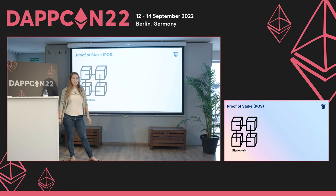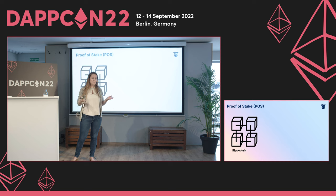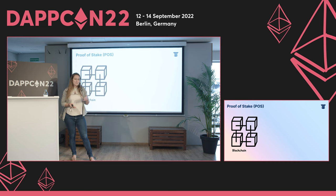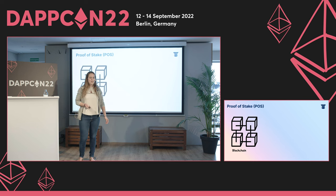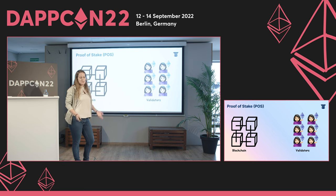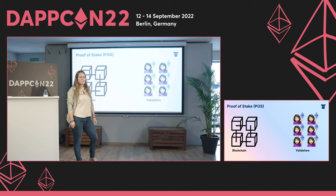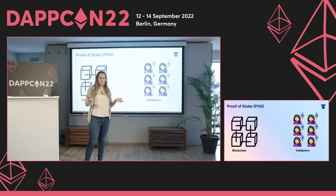To understand MEV and proof-of-stake, you actually have to understand first who are the different actors in proof-of-stake. While in proof-of-work you had miners who were responsible to create the next blocks, in proof-of-stake you now have validators. Every one of you can become a validator — all you have to do is stake 32 ETH and run an execution and consensus client.